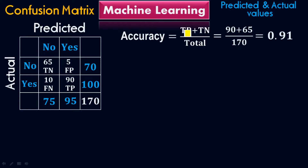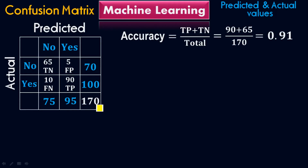For the accuracy, true positive equals 90, and true negative equals 65. So 90 plus 65 all over 170. We have total 170 predicted and actual values. 90 plus 65 all over 170 equals 0.91, meaning the accuracy of this model will be 91%.